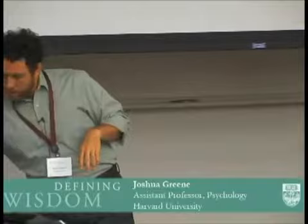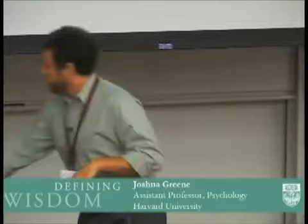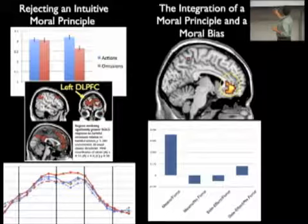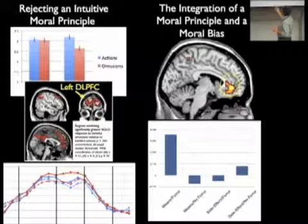Looking at the behavioral data, there were two types of people. Some people abided by the action-omission distinction — they said that allowing people to be harmed in the name of the greater good is not as bad as actively harming people in the name of the greater good. Then there were other people who treated these two things as equivalent.